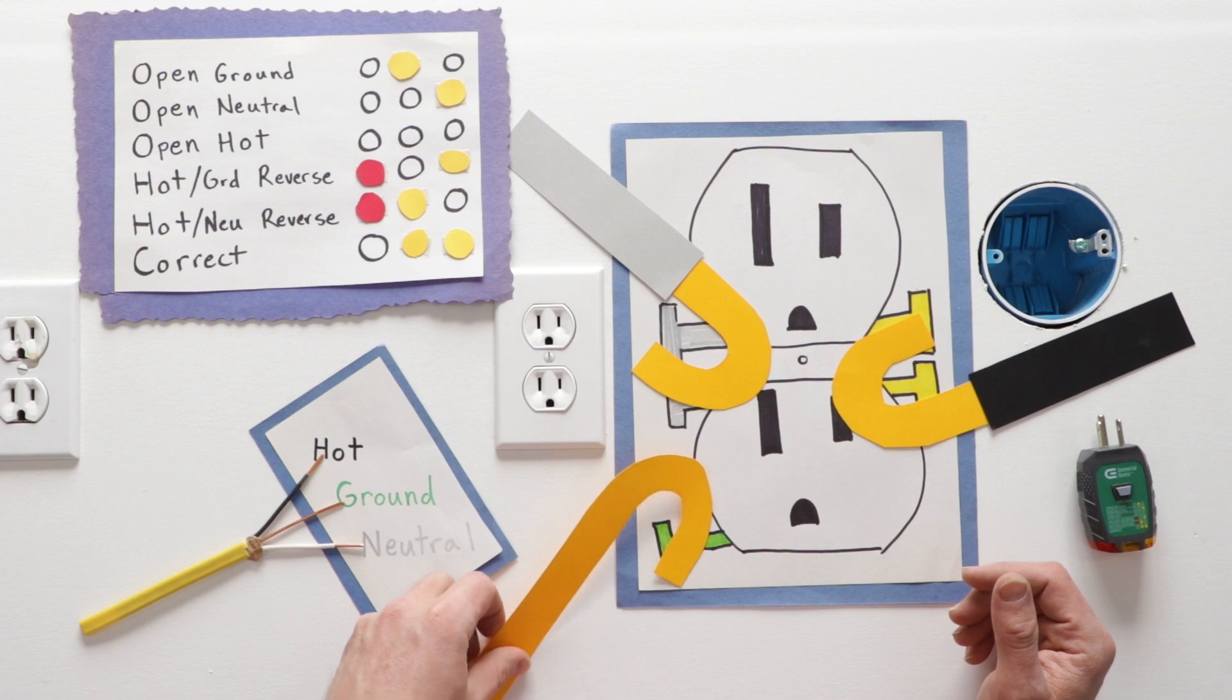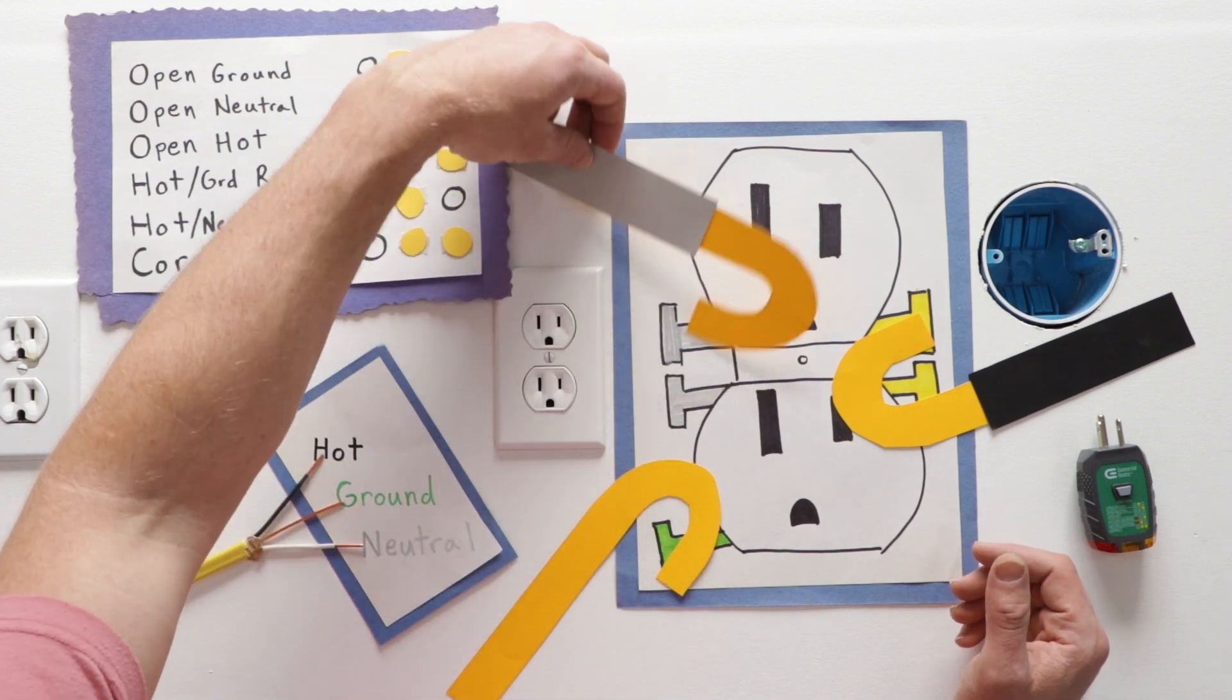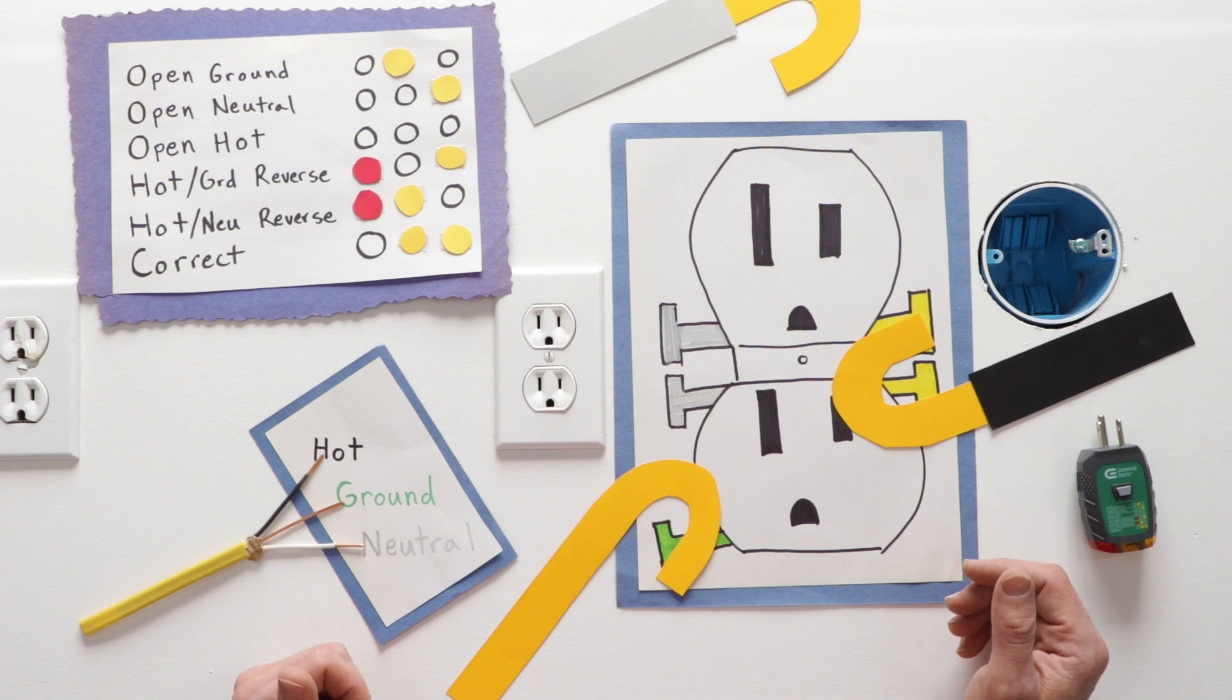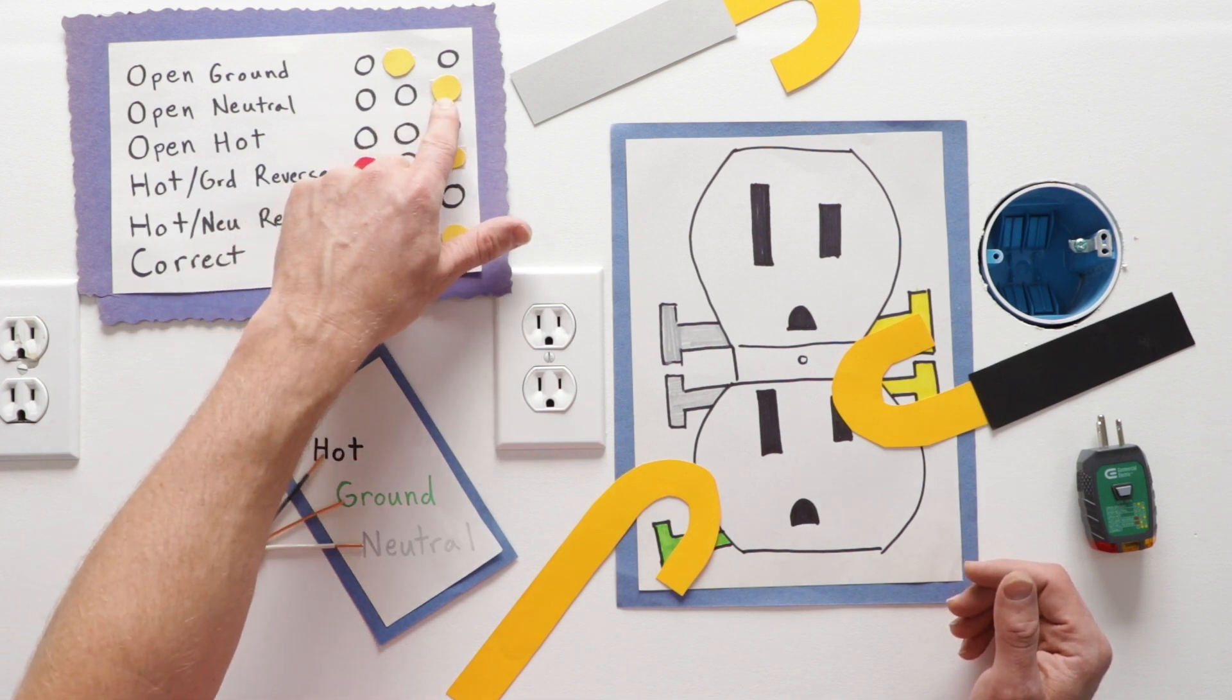The next is open neutral. It means the white's not connected. That's going to give you just one yellow.